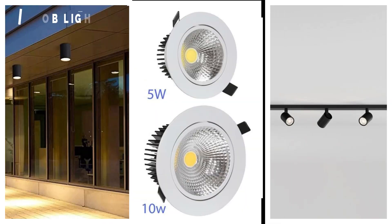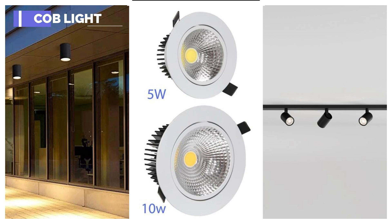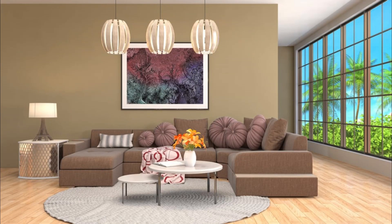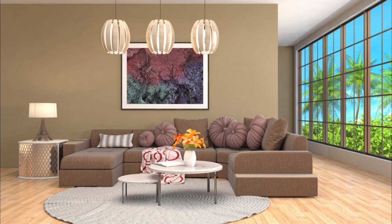COB lights have both ceiling and wall-mounted models, and also come in track light format. They have a narrow cone of illumination, thus good for focused lighting. If your house is missing something after spending a hefty amount on interior, that may be due to the absence of COB lights.